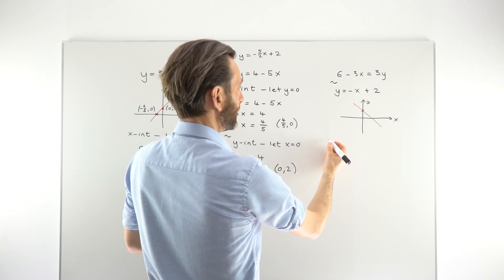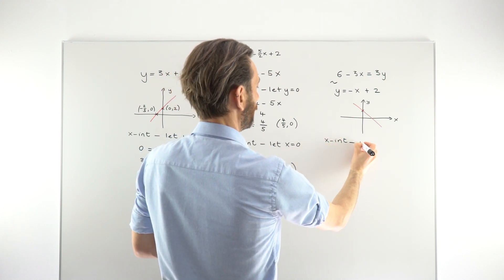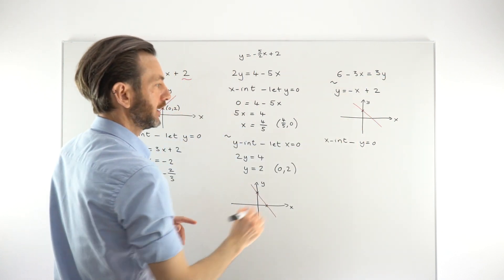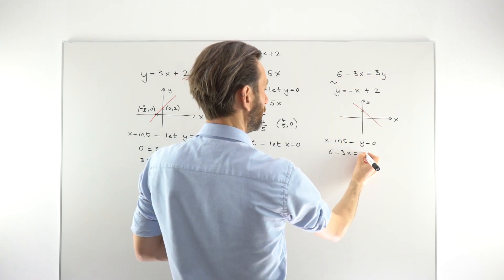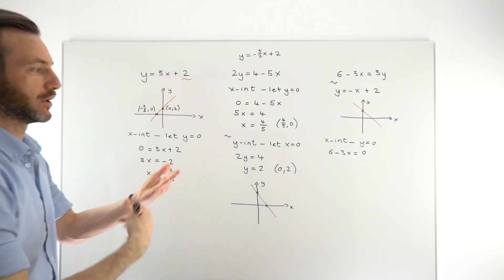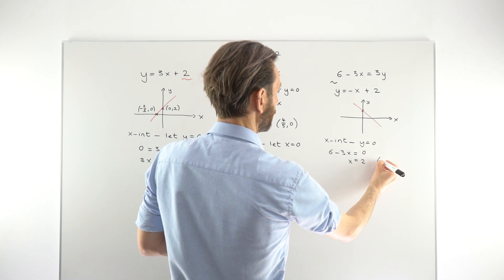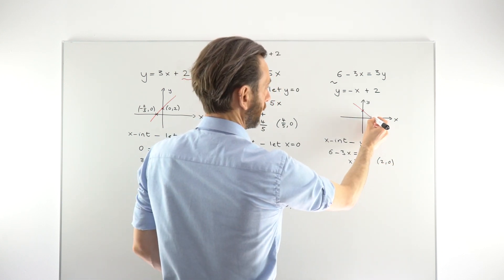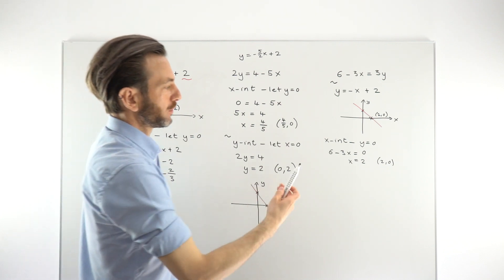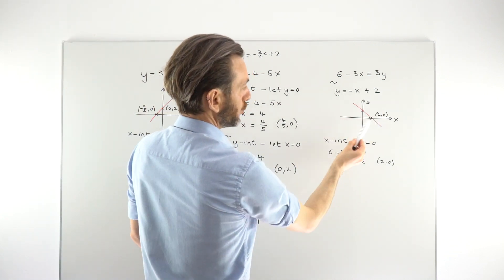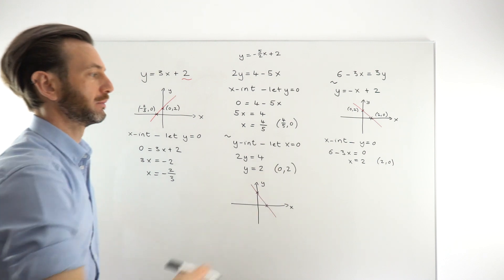Starting with the x-intercept: letting y be 0, putting 0 in for y gives the linear equation 6 minus 3x equals 0. Solving by rearranging for x, we find x equals 2. So the full coordinate is (2, 0). Now, we already know the y-intercept is 2 from rearranging the formula, so that point should come out to be (0, 2).